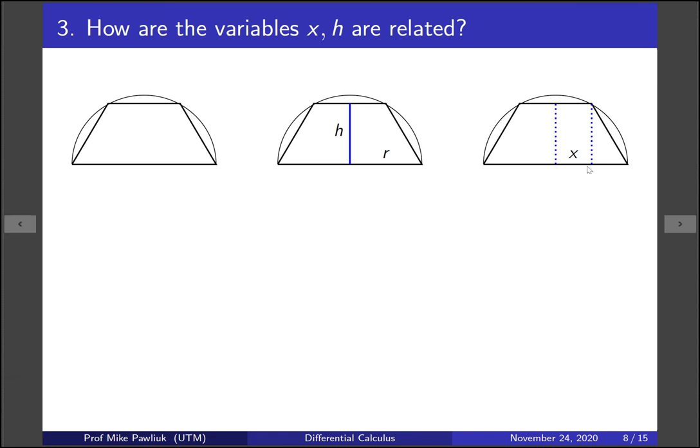Well if you go out x amount here and go up h you get to the circle. That tells you that x and h are related by the circle formula. So x squared plus h squared is r squared. Now solving for x gives us x is the square root of r squared minus h squared.